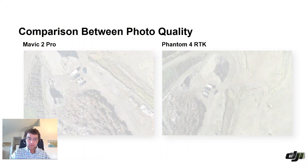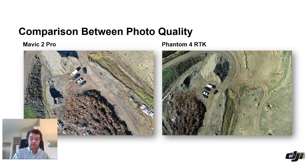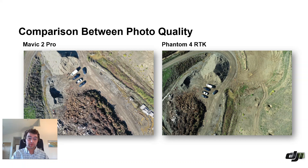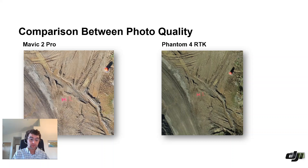Comparing photo quality between the two: Mavic 2 Pro on the left, Phantom 4 RTK on the right. Although they were flown at the same time of day, the photo on the right is noticeably crisper than the one on the left. The same difference is visible on the ground control markers — it's a little bit crisper for the Phantom 4 RTK than for the Mavic 2 Pro.